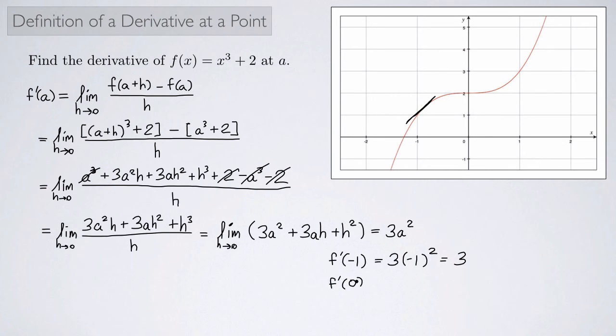How about f prime of 0? What's that? So that would be 3 times 0 squared, which is 0. So here's 0 right here. And so if I were to try and draw a tangent line, it would be a flat line right here, which would have a slope of 0. So that makes sense.